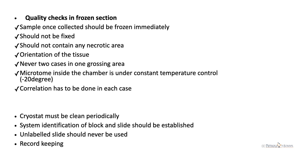Quality checks for frozen sections include: the sample should be frozen immediately once collected and should not be fixed in formalin; it should not contain any necrotic area; proper tissue orientation must be taken and pictures taken whenever needed. Never have two cases in one grossing area. The microtome inside the chamber is under constant temperature control at minus 20 degrees, and the machine must be started in the morning if frozen sections are expected. The cryostat machine must be cleaned periodically, slides must be labeled, and record keeping is of utmost importance.